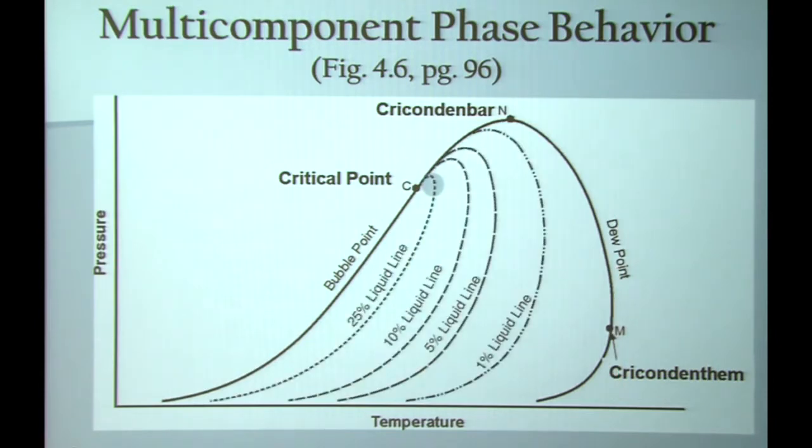We have red lines which are called quality lines. Anywhere along these liquid quality lines, you will have a constant mole percent of liquid. So anywhere along, for instance, the 10 percent liquid line, I will have 10 mole percent liquid and 90 mole percent vapor. One of the things to notice on these quality lines is that they are not equidistant in the phase envelope.